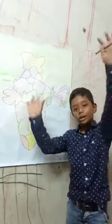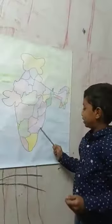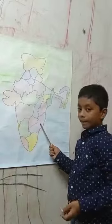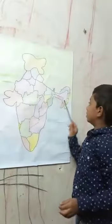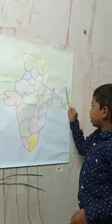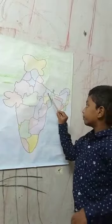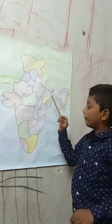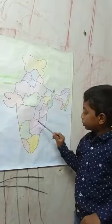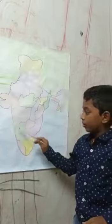Come on, let's see the states and their capitals. Andhra Pradesh — Amaravati. Arunachal Pradesh — Itanagar. Assam — Dispur. Bihar — Patna. Chhattisgarh — Raipur.